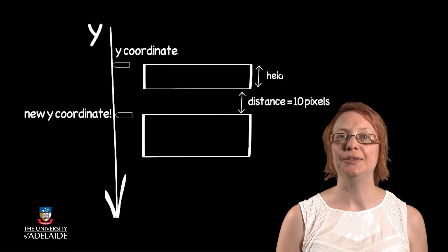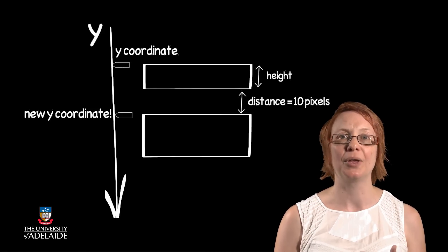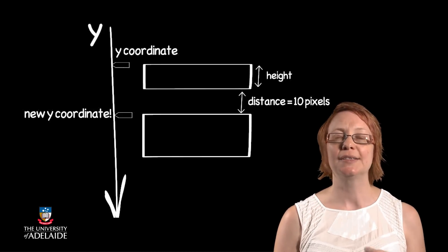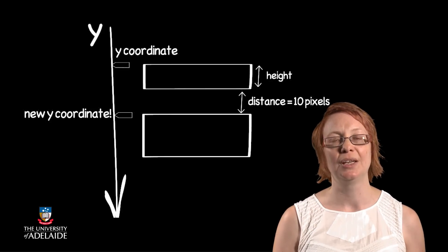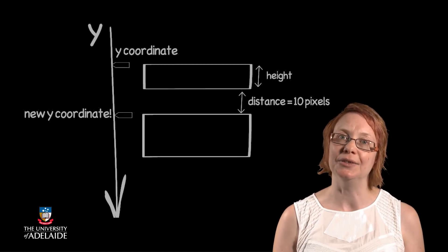We can calculate this as the Y coordinate value for our first rectangle, or the current value of Y, plus the height of that first rectangle. This takes us to the bottom of the first rectangle, plus then also adding in the distance.